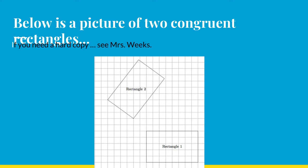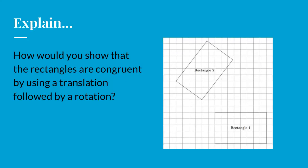Let's continue to prove congruency, but now let's use two different rectangles. I actually have a copy of this, so if you want a hard copy, come and see me. Your task is to explain, how would you show that the rectangles are congruent using a translation followed by a rotation? Go ahead and pause me while you get a plan, and when you're ready, come back and see what my plan is.